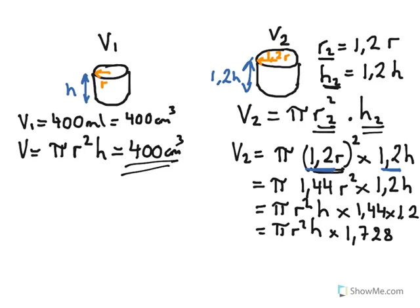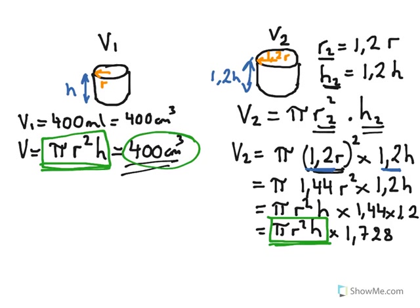But we actually know something if we look at this term here now. We have a term here saying pi r squared h. The volume of the second tin is pi r squared h multiplied by a factor of 1.728. But we know that this term pi r squared h of the first tin, we actually have a value for that. We know that pi r squared h for the first tin is actually 400 centimeters cubed. So we can actually put that value into our second equation.